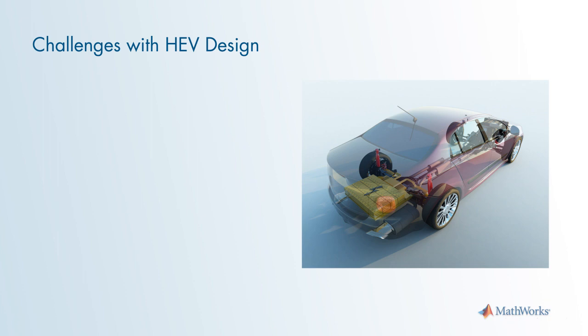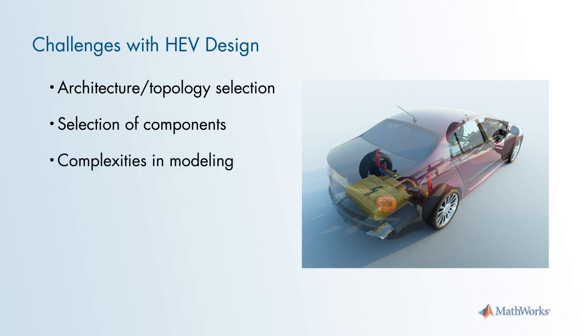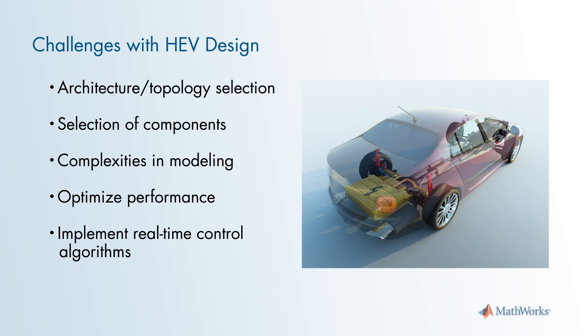There are many challenges when designing a hybrid electric vehicle. You have to select the architecture or the topology of the powertrain. You have to select the types and sizing of components, such as the type of motor, its maximum torque or power rating, or the type of battery and its energy capacity. It's also very difficult to model the HEV plant and control algorithms if you've never done so before. You also want to do your best to optimize the HEV system performance over a wide range of operating conditions. And if you're intending to build real prototypes or production systems, the control algorithms you develop have to be real-time implementable. That means you can run it on an embedded processor efficiently.